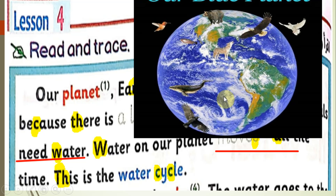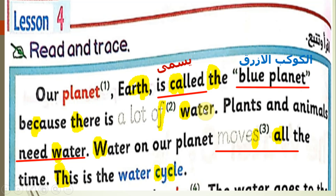71% of Earth's surface is water, which is why it is called the blue planet. 'Because there is a lot of water' — note the word 'of' here is pronounced with a V sound, not F. 'Water' — the W is pronounced like the Arabic واو. So there is a lot of water.